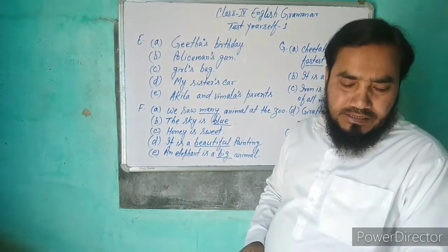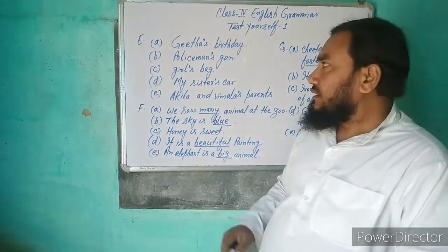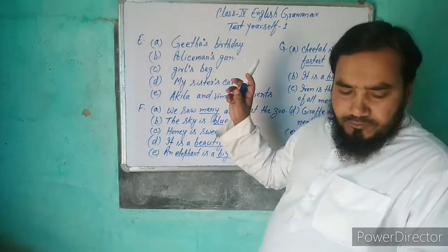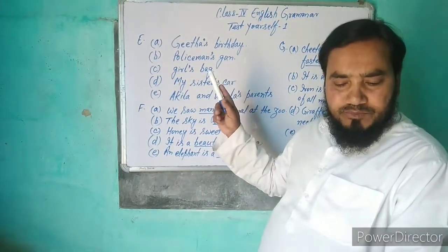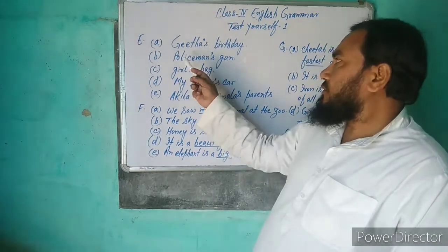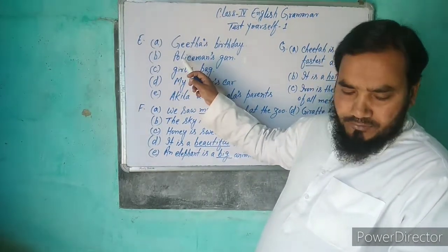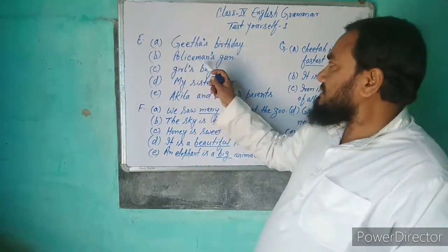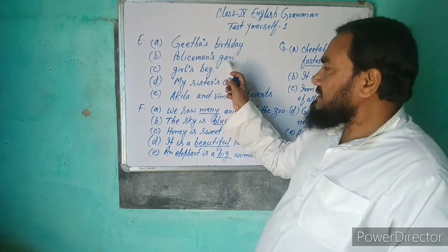اس کے بعد B ہے: The gun of the policeman۔ The gun of the policeman کی جگہ possessive noun لگائیں گے تو sentence بنے گا: Policeman's gun۔